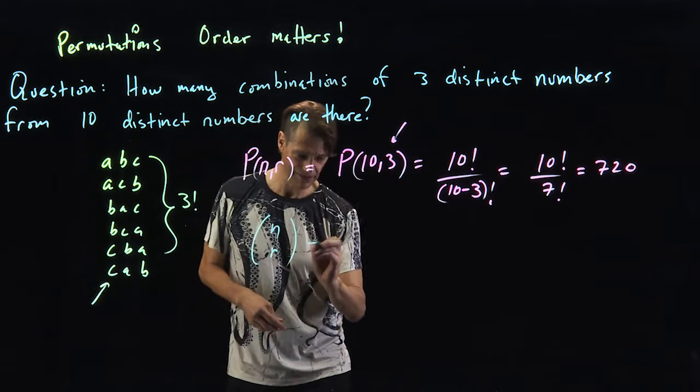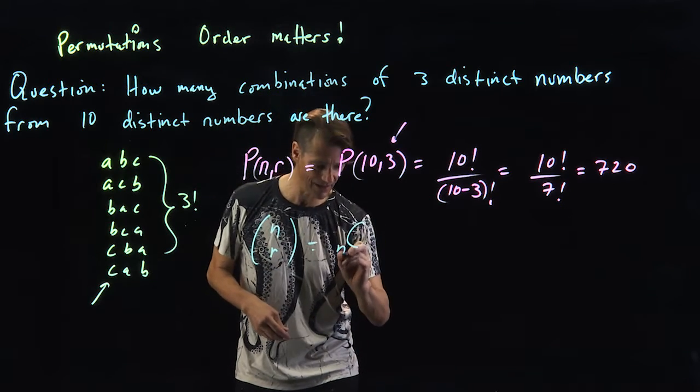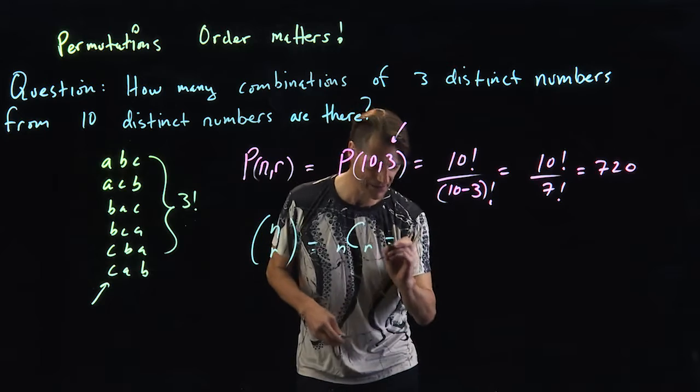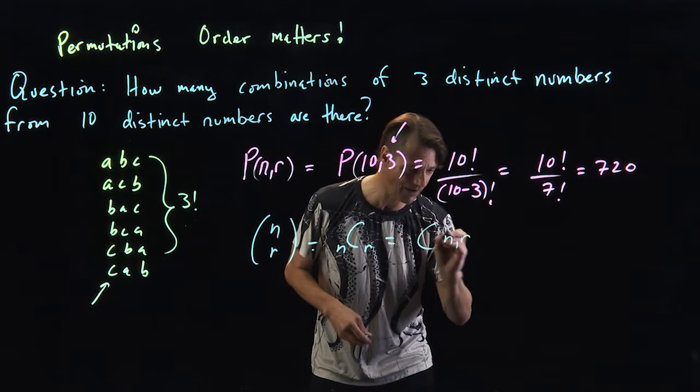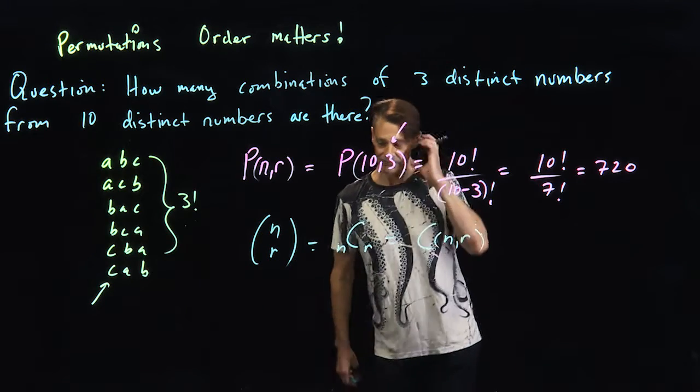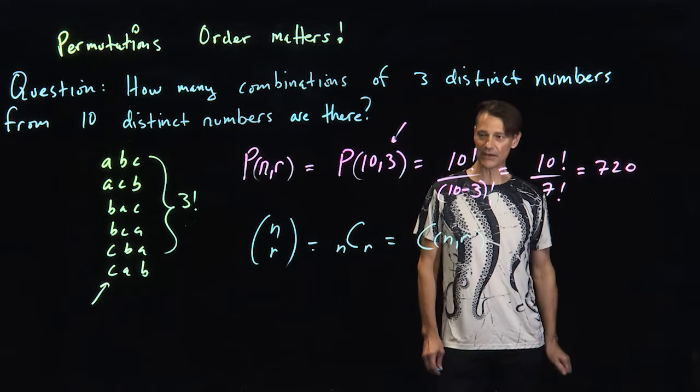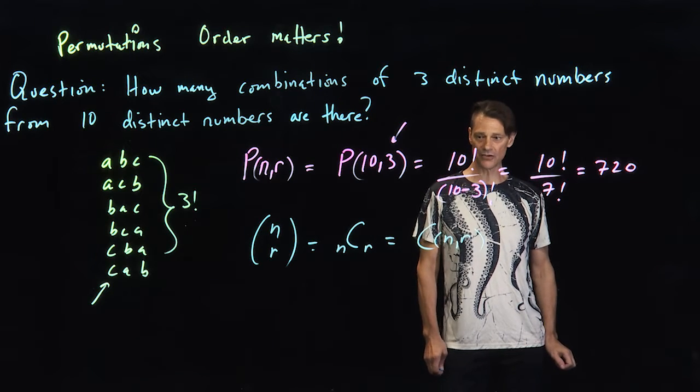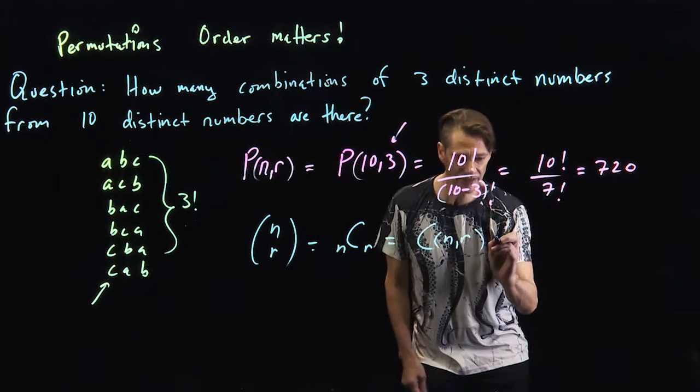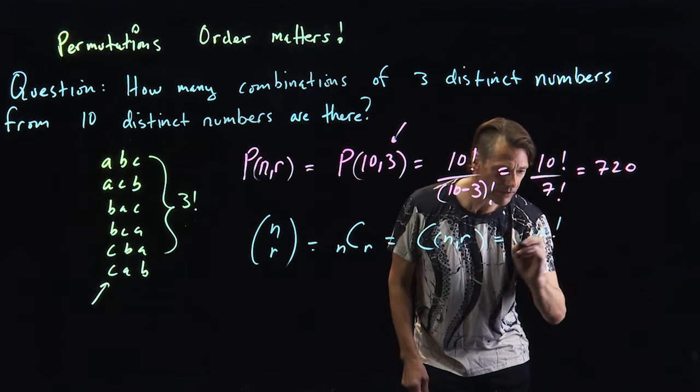N choose r, which is the same as C(n,r), which is the same as C(n,r). There might even be another notation that I'm not thinking about right now, but there's always different notations. Basically, this is going to be n factorial.